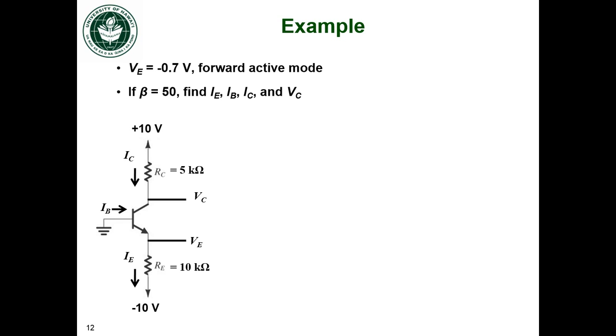So how do we figure this out? Well first of all let's solve for the emitter current. We can do this without knowing anything about BJTs. I know that this voltage is negative 0.7 volts. So just use Ohm's law. The emitter current is going to be negative 0.7 volts.